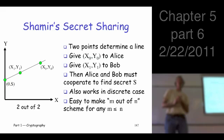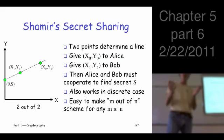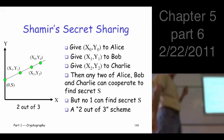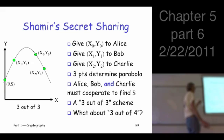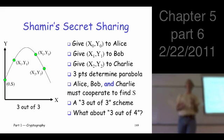How about three out of something? Can we do three out of three, three out of four? How might we do that? A parabola - higher degree polynomials. Here's three out of three, because three points determine a second-degree polynomial. It's a function, so it only goes through the Y axis once, and that point is again the secret. Here we need all three - any two just determines a line, doesn't tell us anything about where the other point is. So two doesn't help; it takes all three.